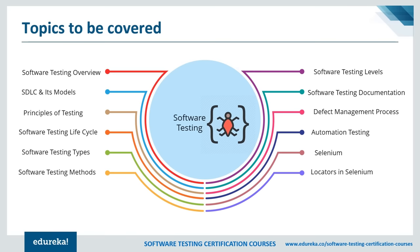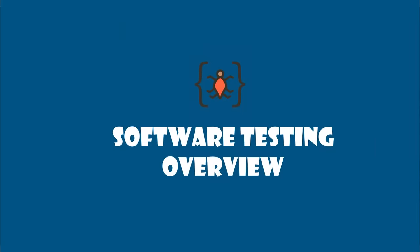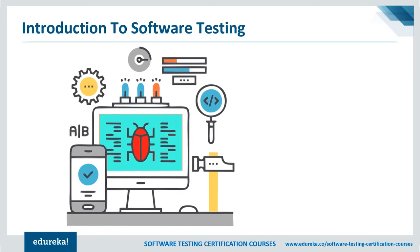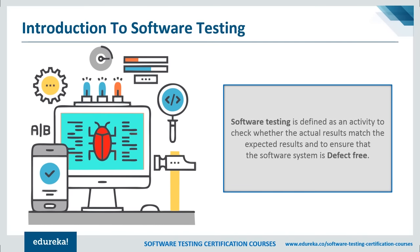Let's understand what software testing is. Software testing can be defined as an activity to check whether the actual results match the expected results, and it also ensures that the product is free from any bug or defect. Testing involves evaluating a product's module or system to identify errors, gaps in requirements, or missing elements. Testing can be done manually or with the help of automated tools.